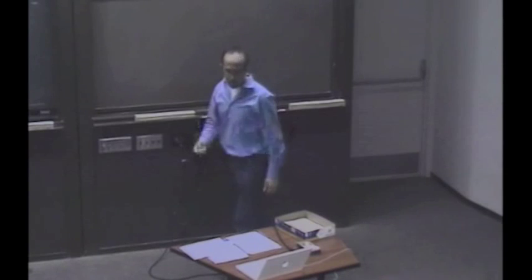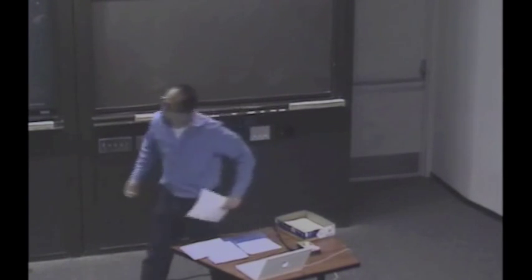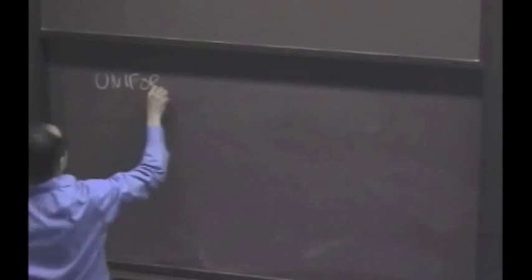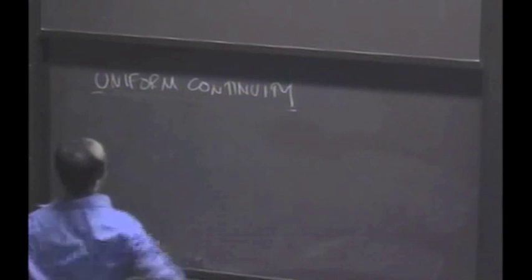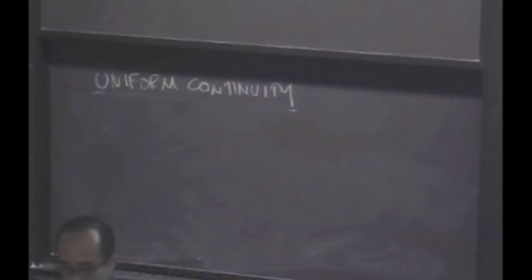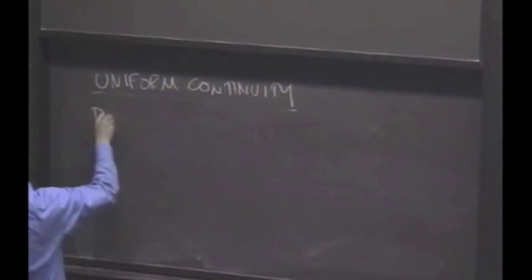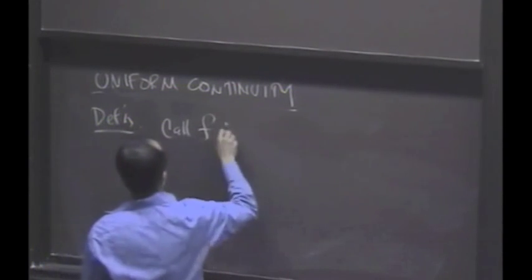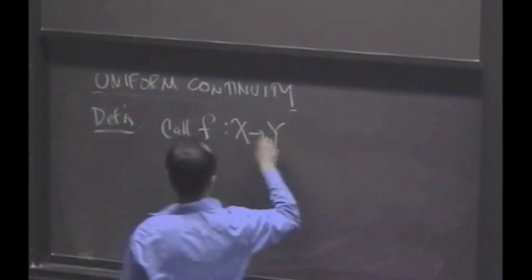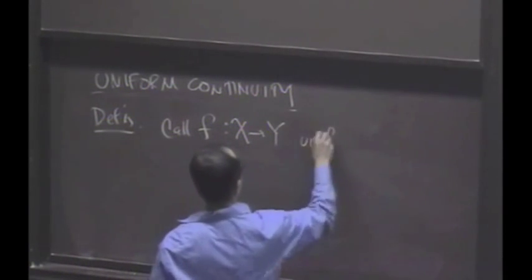So what I want to talk about today is uniform continuity, which we defined last time, but I will remind you what it is. It's actually related to the concept of continuity. So the definition of uniform continuity is, well, let's call a function from a metric space x to a metric space y uniformly continuous.